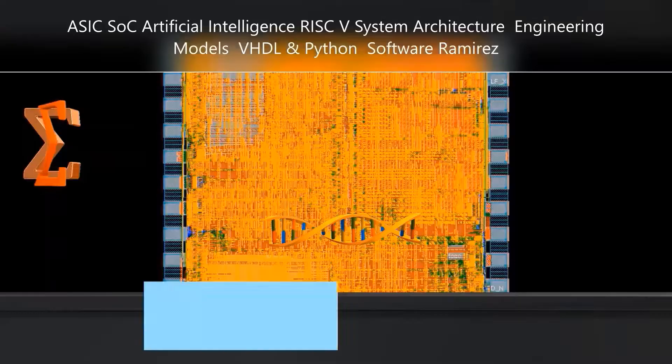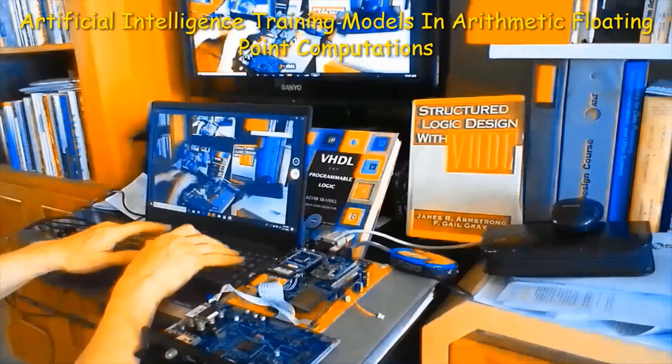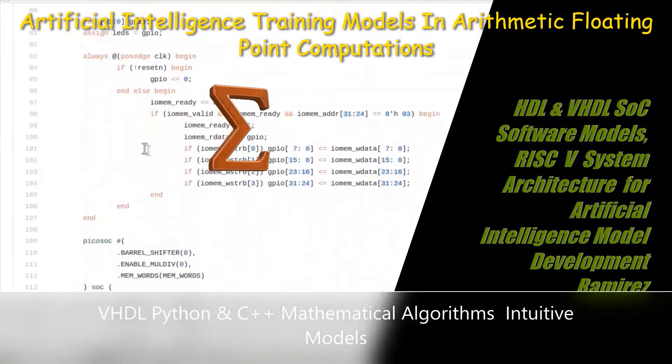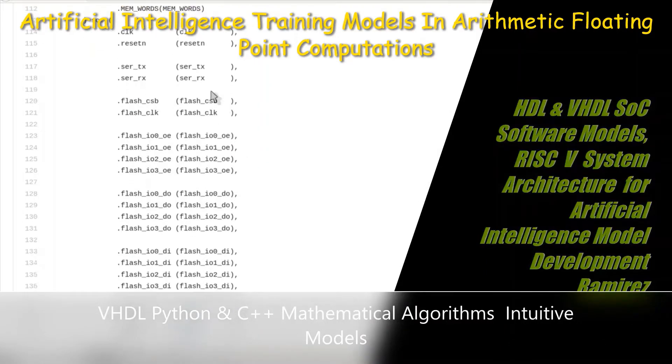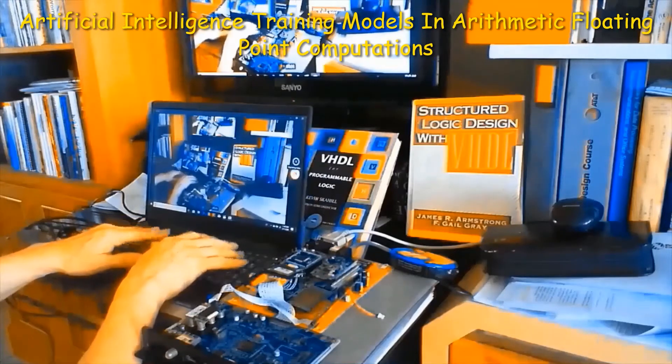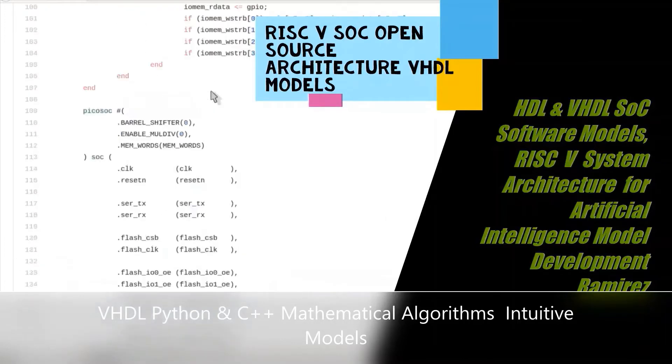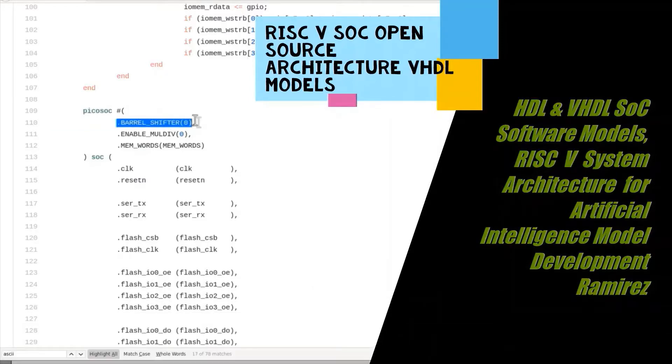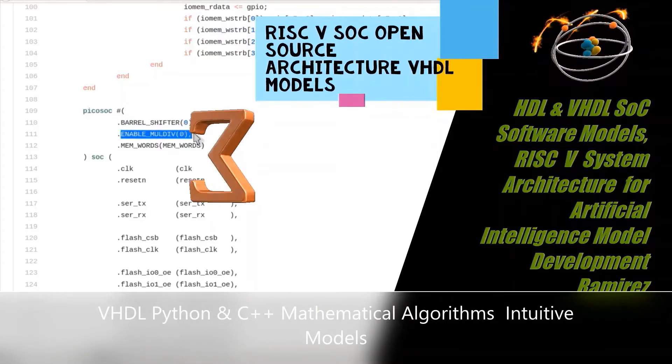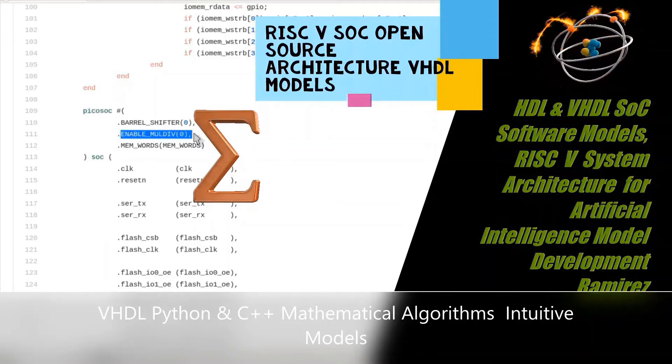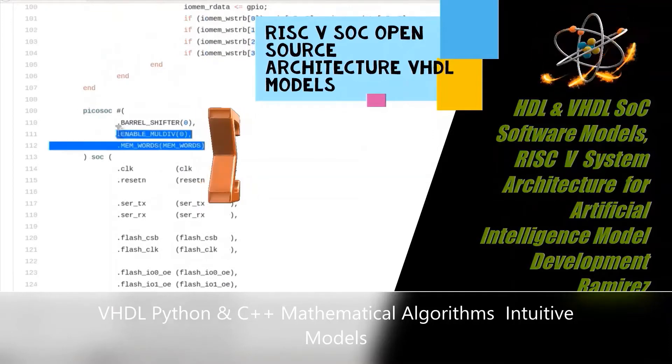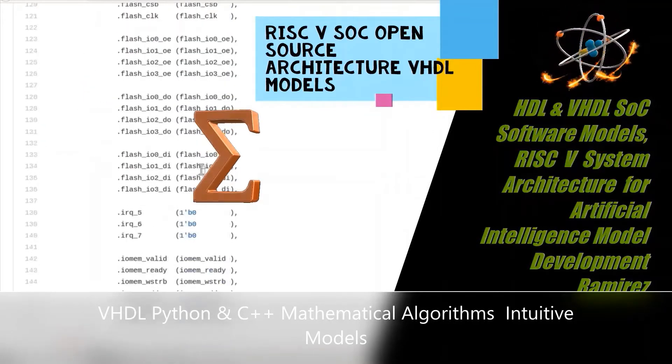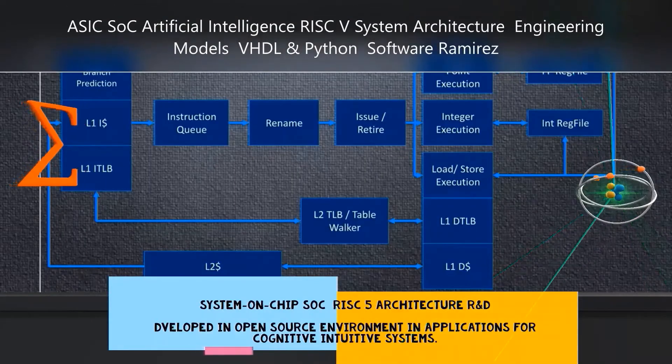In this video, I illustrate the system implementation of the RISC-V system-on-chip subset. All instructions start by using the program counter to supply the instruction address to the instruction memory. After the instruction is fetched, the register operands used by instructions are specified by fields of the instruction. Once the register operands have been fetched, they can be operated to compute a memory address, which is a load or store, to compute an arithmetic result for an integer arithmetic logic instruction, or an equality check for a branch. If the instruction is an arithmetic logic instruction, the result from the arithmetic logic unit must be written to the register.